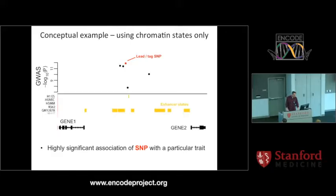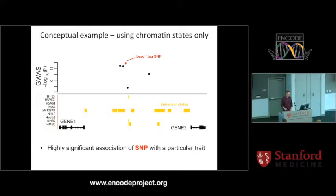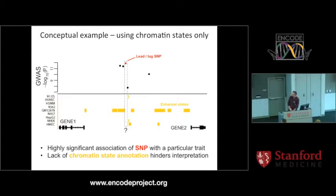This could be some example genomic region with a number of SNP locations. In red, you have a lead or tag SNP that you've measured on a SNP array. On the Y axis, you see some kind of association with a particular trait. As you can see, all of these are in non-coding regions.